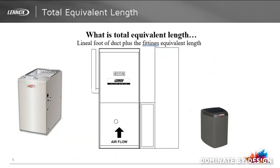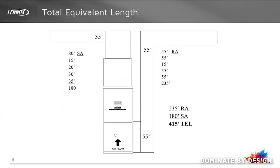So what does total equivalent length mean? Equivalent length is the lineal foot of duct work plus the equivalent length of the fittings. Now that we know what total equivalent feet means, it's time to start calculating all of the duct work — both supply ducts as well as return air ducts — for the total equivalent length. This is where the 415 feet comes from, and it is here where most dealers get lost or simply choose not to calculate duct work they can't see, especially in existing homes or retrofit applications as opposed to new construction from a blueprint. For these reasons, duct work systems get overlooked.